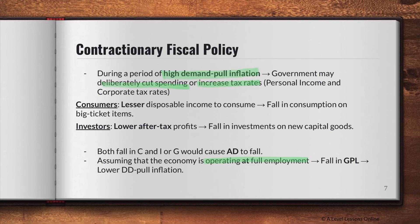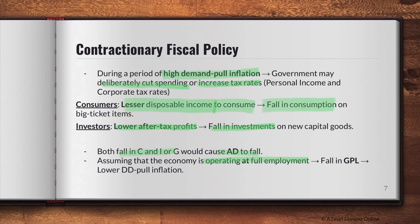With higher taxes, consumers have less disposable income, leading to a fall in consumption on big-ticket items — C falls. For investors, it is the opposite of expansionary policy: lower after-tax profits mean firms have less willingness and ability to invest in capital goods, so I falls as well. A fall in C, I, or G causes AD to fall. Assuming the economy is at full employment — along the vertical section of the AS curve — this leads to a fall in the general price level, reducing demand-pull inflation.